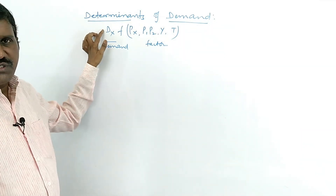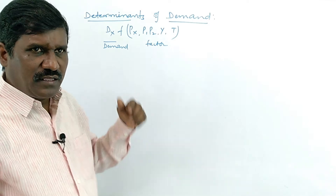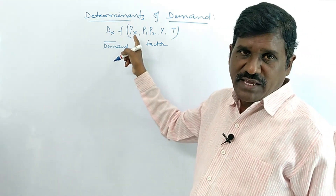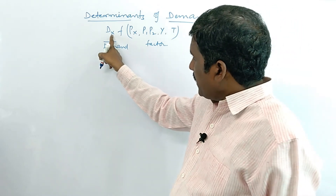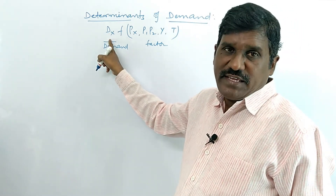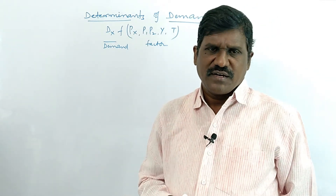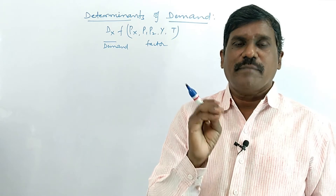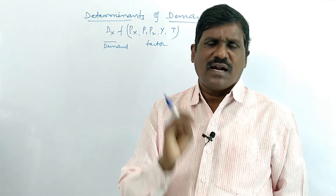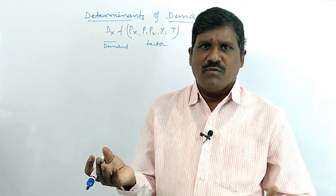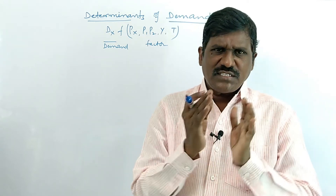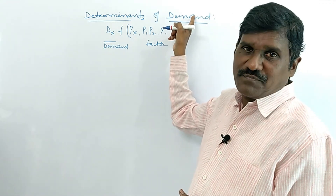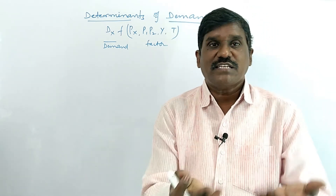What is demand, first of all? If you want more explanation, there are already a number of videos available — watch those for the basics of what is price and what is demand. Dx means demand of commodity X — the desire to purchase the goods. Demand means to purchase the goods; the people who are going to purchase goods and services is called demand. To buy the goods is called demand.